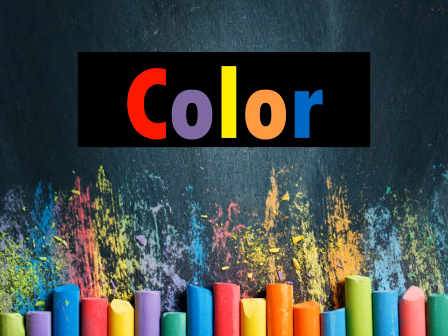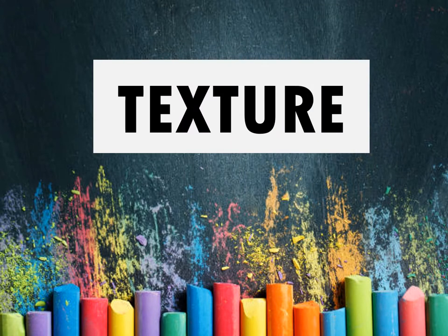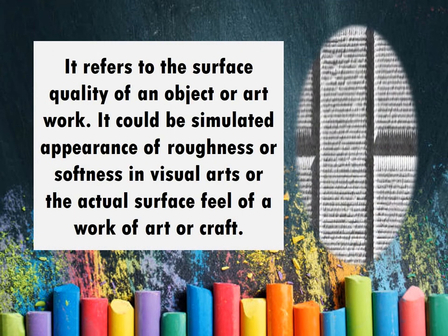The next element of art is color. Color is produced when artists use various pigments and dyes to create a range of different hues, which the viewer's eyes and brain interpret as colors. Next, we have texture. Texture refers to the surface quality of an object or artwork. It can be a simulated appearance of roughness or softness in visual arts, or the actual surface feel of a work of art or craft.